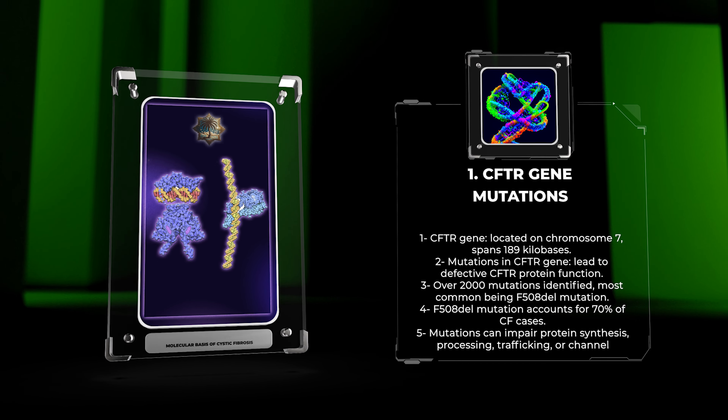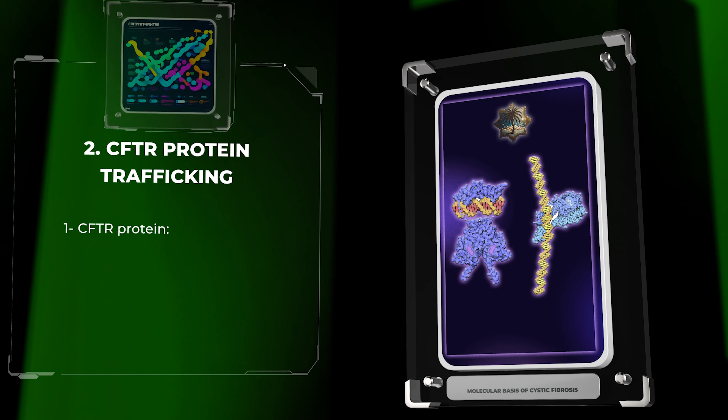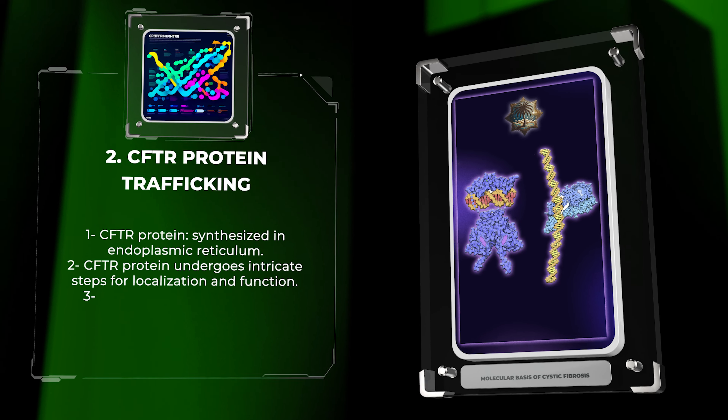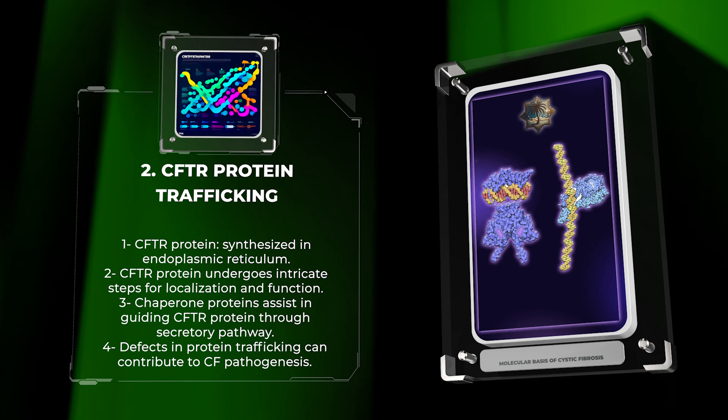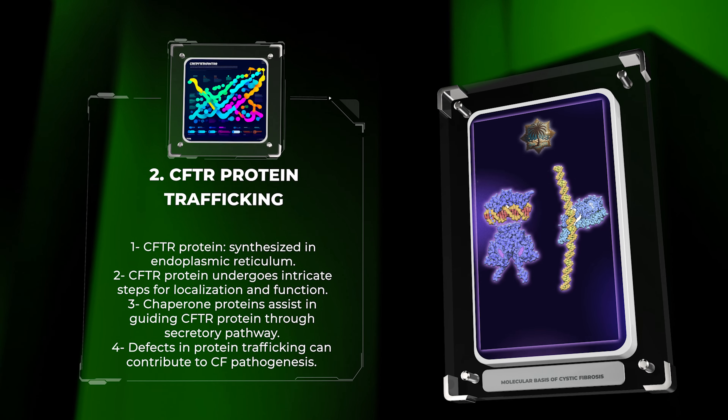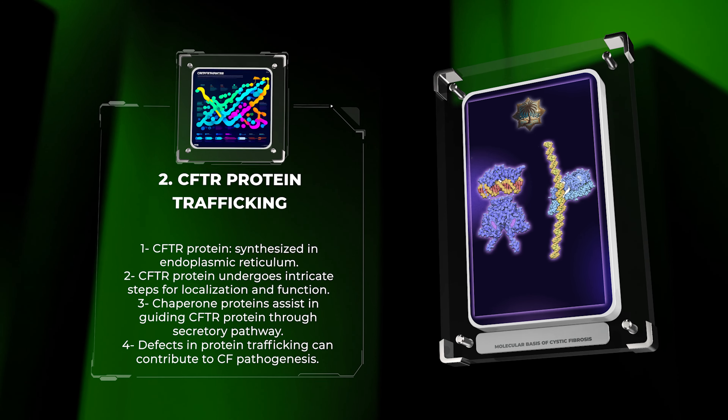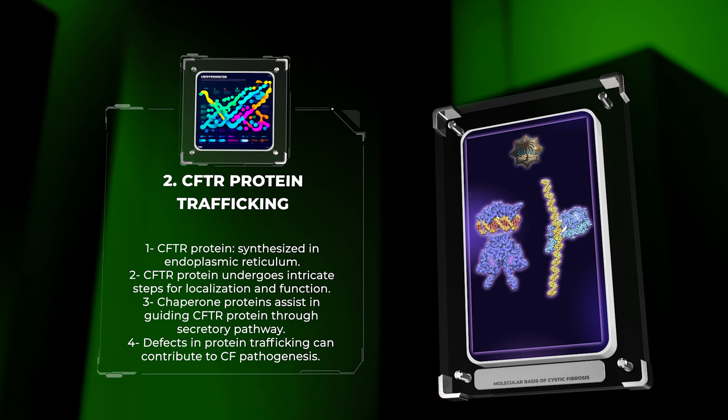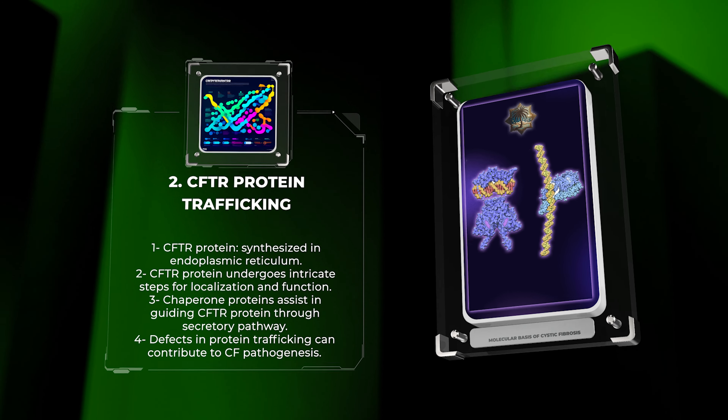After synthesis in the endoplasmic reticulum, the newly synthesized CFTR protein undergoes a series of intricate steps to ensure its proper localization and function. Chaperone proteins assist in guiding the nascent CFTR protein through the secretory pathway, allowing it to reach the plasma membrane. Defects in protein trafficking can prevent CFTR from reaching its destination and contribute to CF pathogenesis.